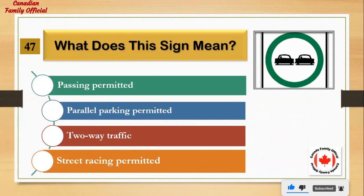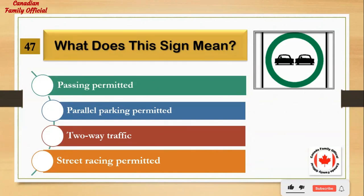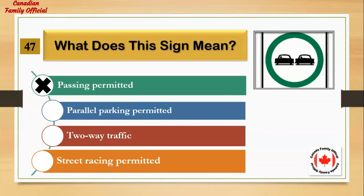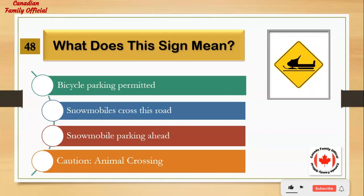What does this sign mean? Number 1: passing permitted. Number 2: parallel parking permitted. Number 3: two-way traffic. Number 4: street racing permitted. And the answer is: passing permitted.